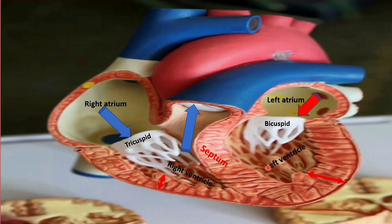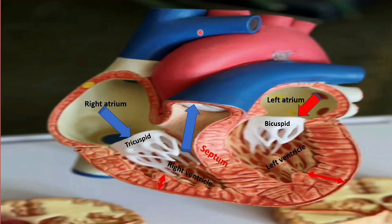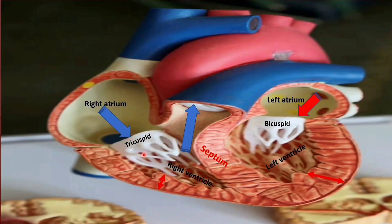Oxygenated blood from the left ventricle passes on to the aorta, then to arteries, and then to different parts of the body. When carbon dioxide is present in the blood — that is deoxygenated blood — it comes through the bigger veins called vena cava to the right atrium. From the right atrium it goes to the right ventricle. The tricuspid valve prevents back flow from right ventricle to right atrium, while the bicuspid valve is present in the left chamber.